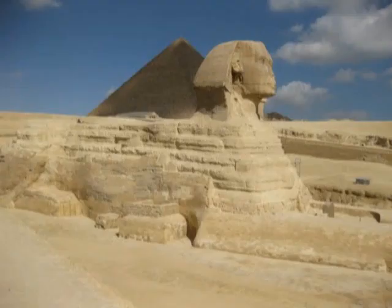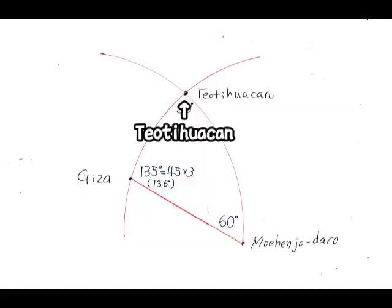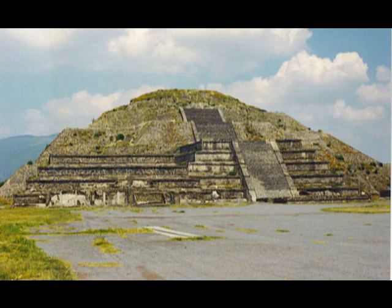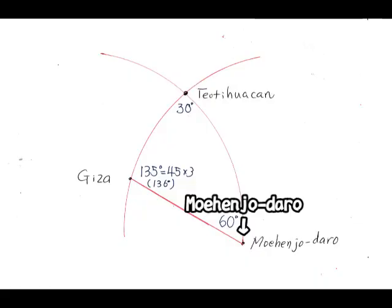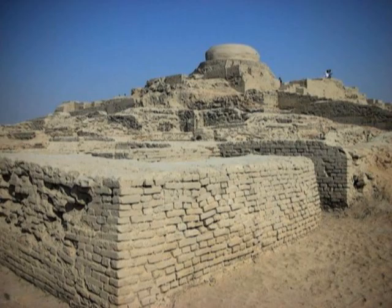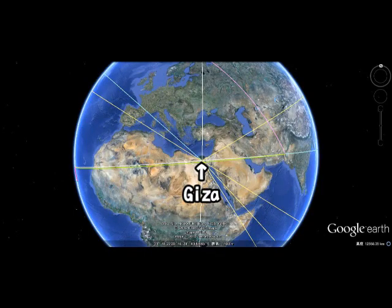This is Giza in Egypt. And this is Teotihuacan, now in Mexico. And the last one is Mohenjo-daro, now in Pakistan. And I'd like to talk about these 3 points.